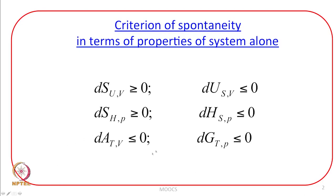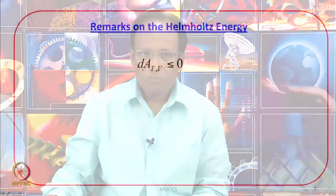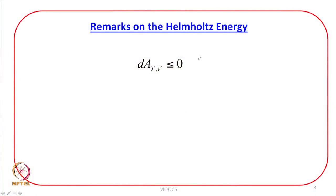Today we will pick up dA at constant temperature and volume should be less than or equal to 0 as one of the criteria of spontaneity. According to this criteria, the change in Helmholtz function or Helmholtz energy at constant temperature and volume should be less than or equal to 0.